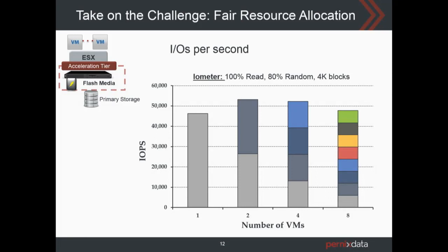Another important question: what happens when there are multiple virtual machines accessing this acceleration tier? No problem. In this experiment, all virtual machines were running predominantly read workloads, scaled from one VM all the way to eight VMs. When there was only one VM, reads were close to 45,000 IOPS. As the number of VMs increased, the total IOPS remained at peak value, equally distributed among the VMs. At eight VMs there was a slight dip because all CPUs in the machine were fully committed, but the distribution remained very fair. This shows the acceleration tier can handle multiple virtual machines issuing lots of requests.